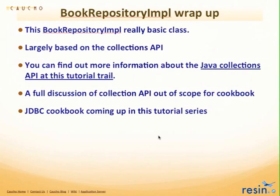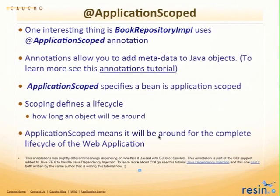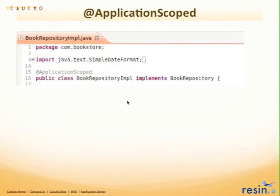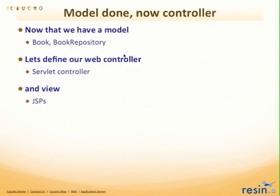It's a really basic class largely based on the Java Collections API. The BookRepository is not really the focus of the tutorial — it's just something we need for the listing. One interesting thing about this BookRepository implementation is that we're using the application-scoped annotation so that we can inject it into the servlet. This is part of Java EE 6 — there are tutorials about these features linked if you want to know more. Application scope means it's going to be around for the entire web application.